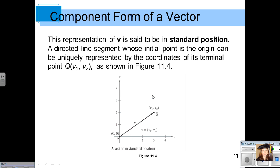Now let's talk more about component form of a vector. This representation of V, bold vector V, is said to be in standard position. A directed line segment whose initial point is at the origin starting right here at (0,0) can be uniquely represented by the coordinates of its terminal point Q, which has the components V1 and V2. So we can write our vector V using component form. Notice these little angle brackets here where the coordinates of Q are actually the components of the vector. When we think about this geometrically, V1 is how far to the right you go from the initial to the terminal. V2 is how far up you go.